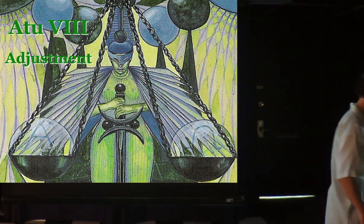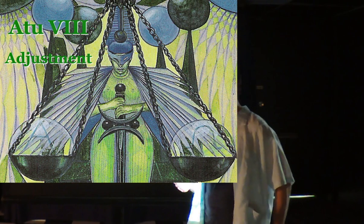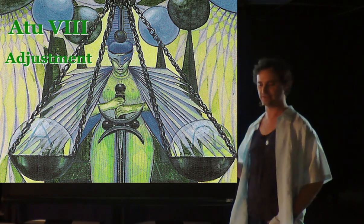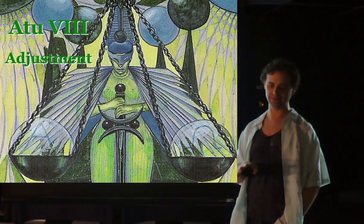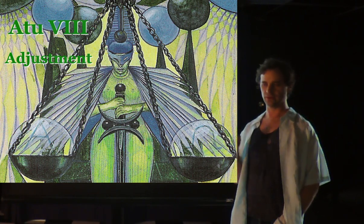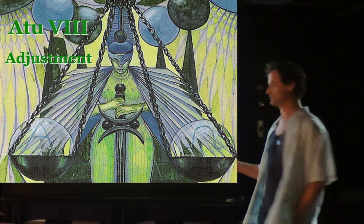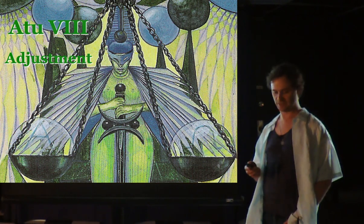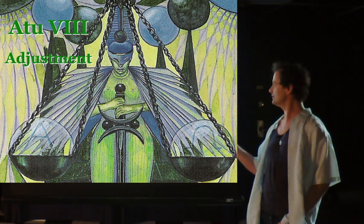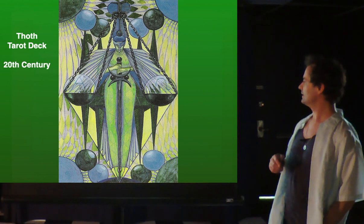Tonight's card is Atu number 8, Adjustment. I was thinking about whether I would go in order of the cards or go along the paths along the Tree of Life. I opted to go with the paths of the Tree of Life. This is the full card in all of its splendor.